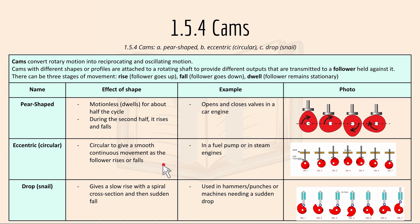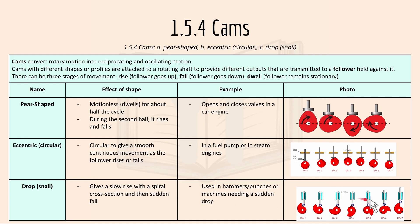An eccentric or circular cam gives a smooth continuous movement as the follower rises or falls, like in a fuel pump or steam engines. A drop or snail cam gives a slow rise with a spiral cross section and then a sudden fall, and is used in hammers, punches, or machines needing a sudden drop. As it goes up higher to the peak, after that point it falls down suddenly.